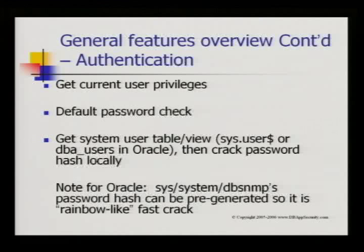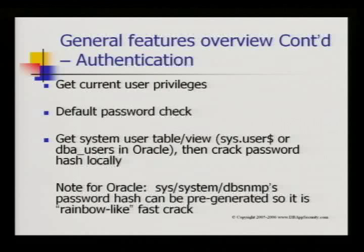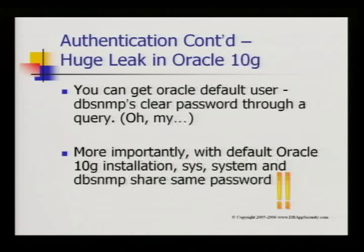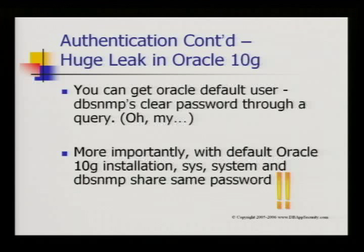Authentication, current user privileges, password check, system user views — and as mentioned, the system and DBSNMP passwords can be pre-generated because you already know the username. Based on the dictionary you can generate the hash already. For Oracle 10G, there's a significant leak: the DBSNMP password can be retrieved through a simple query. The reason is that it's encrypted, not hashed. More importantly, the default 10G installation has sys, system, and DBSNMP sharing the same password — so once you know the DBSNMP password, you know sys and system.